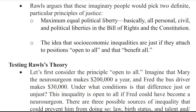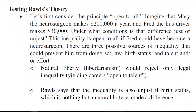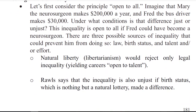Testing Rawls' theory: let's first consider the principle 'open to all.' Imagine that Mary the neurosurgeon makes $200,000 a year and Fred the bus driver makes $30,000 a year. Under what conditions is that difference just or unjust? This inequality is open to all, and Fred could have become a neurosurgeon. There are three possible sources of inequality that could prevent him from doing so: law, birth status, and talent or effort.